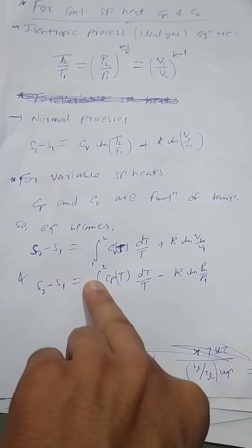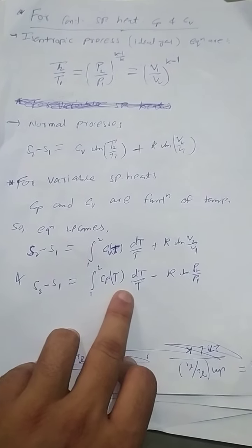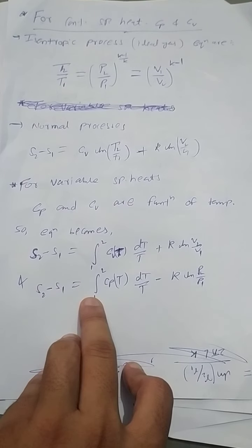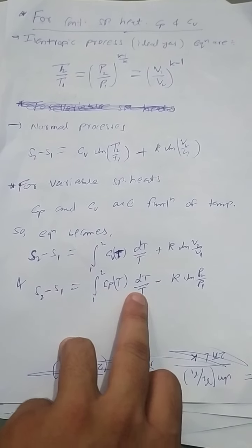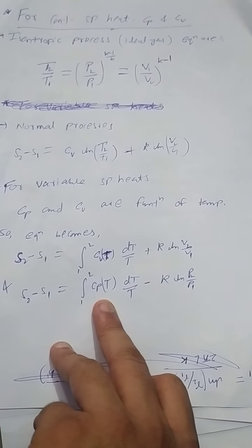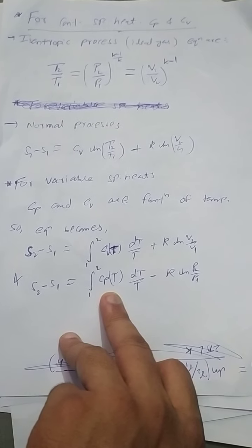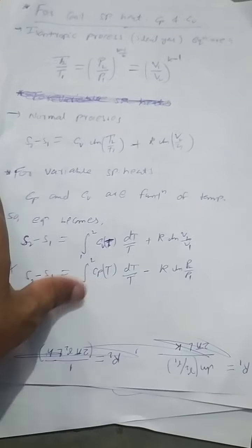The first term here, cp(T) dT over T integrated from initial to final, this term is tabulated in the table so that it can be used directly to calculate the entropy change.